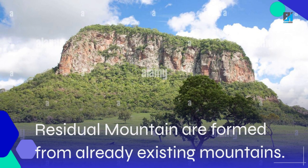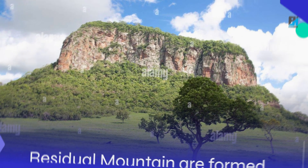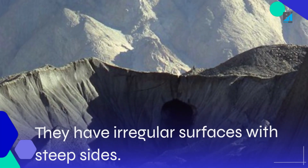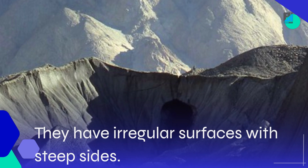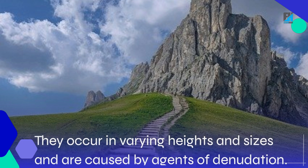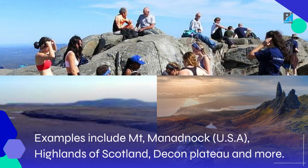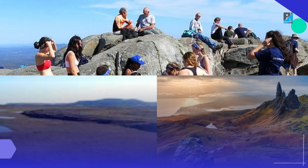Residual mountains are formed from already existing mountains. They have irregular surfaces with steep sides. They occur in varying heights and sizes and are caused by agents of denudation. Examples include Mount Monadnock in the USA, Highlands of Scotland, Deccan Plateau, and more.